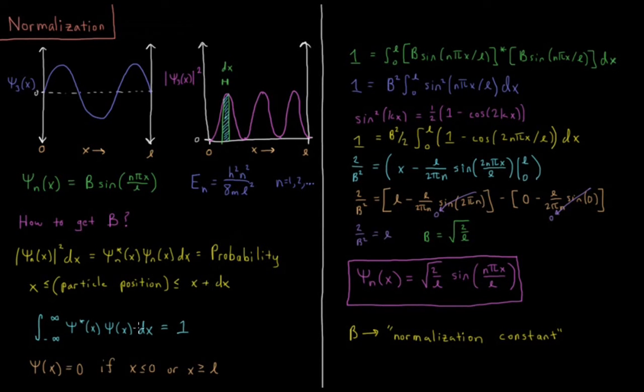And also from previous videos we said that the integral from negative infinity to infinity, so the integral over all space of psi star times psi dx must equal 1. So psi star psi dx is the probability that the particle is in a little small location. Integrate that value over all locations, the probability better sum up to 100% or 1.